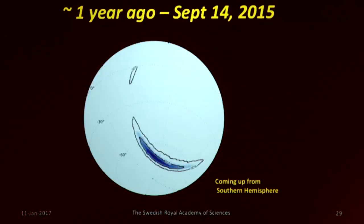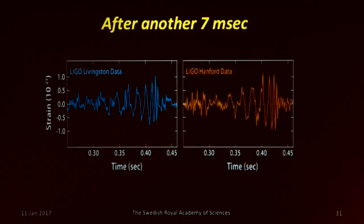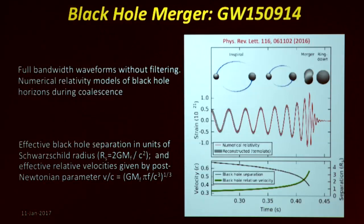One and a half years ago, we saw a signal coming up through the southern hemisphere. About 20 milliseconds later it was seen in Livingston, Louisiana, and then seven milliseconds later in Hanford, Washington. This is the same picture I showed on the first slide. Our understanding of it: the oscillations getting faster and higher frequency as the objects come together, then the merger, then the ring-down. Those are the three characteristic pieces.